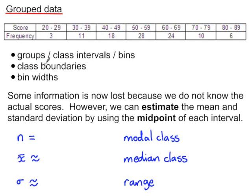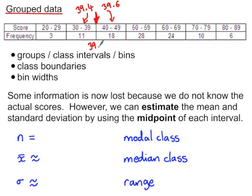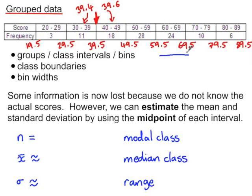The boundaries between the classes: imagine we have a score of 39.4 — that would go into this bin — and if we had a score of 39.6 it would go into this bin. The boundary between the two bins is 39.5. Using those class boundaries, we can see that the bin width is 10.